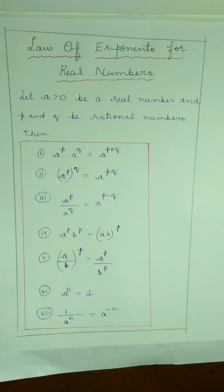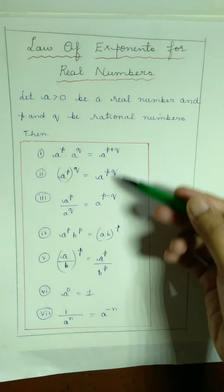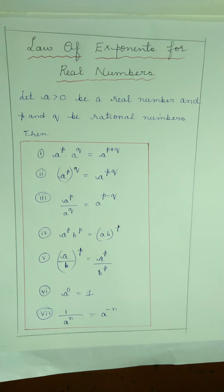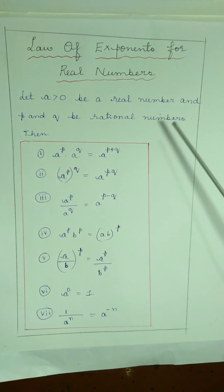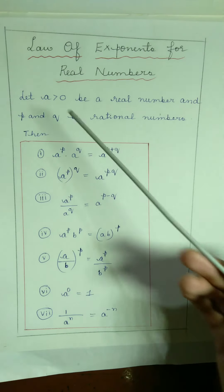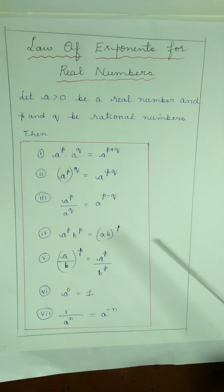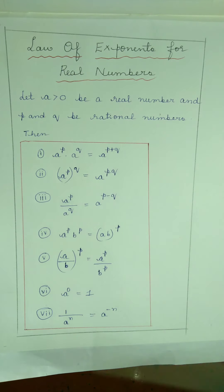But in number systems, we have the following extended Laws of Exponents for Real Numbers. In the place of m and n, we have substituted p and q, where p and q are rational numbers. We know that rational numbers can be represented in the form of p by q. Therefore, let a greater than 0 be a real number and p and q be rational numbers.